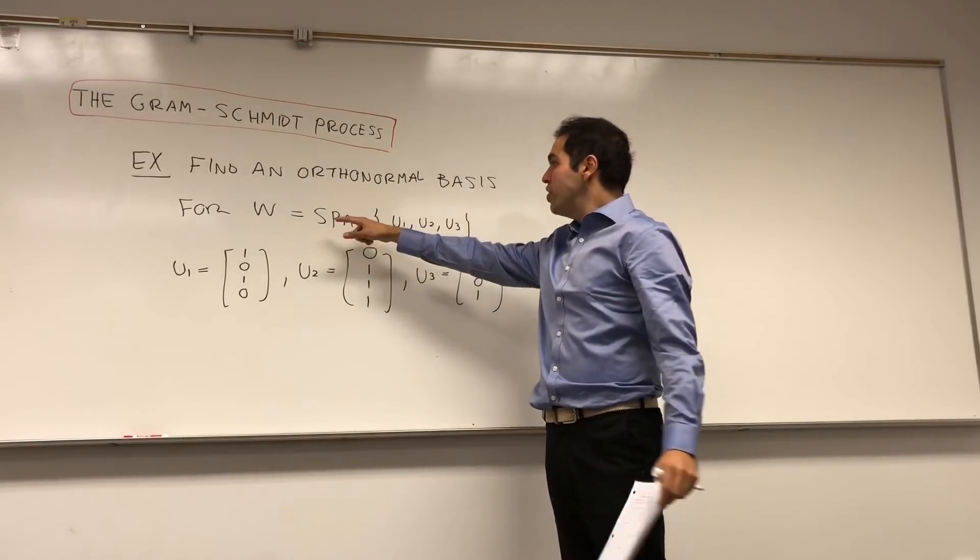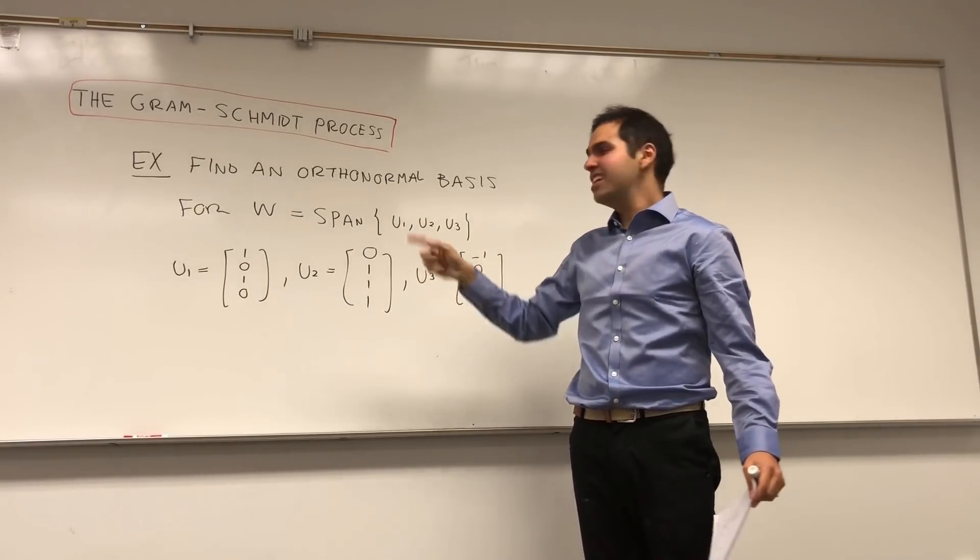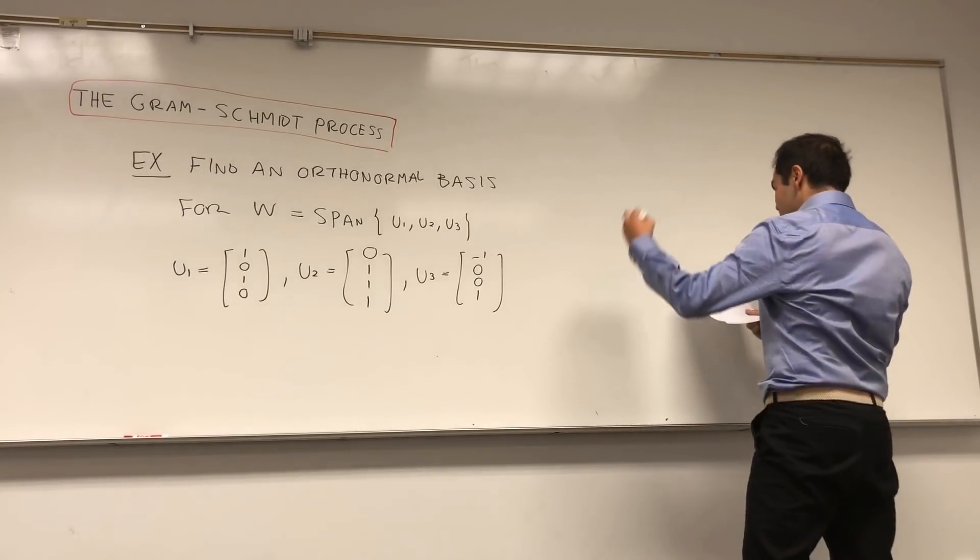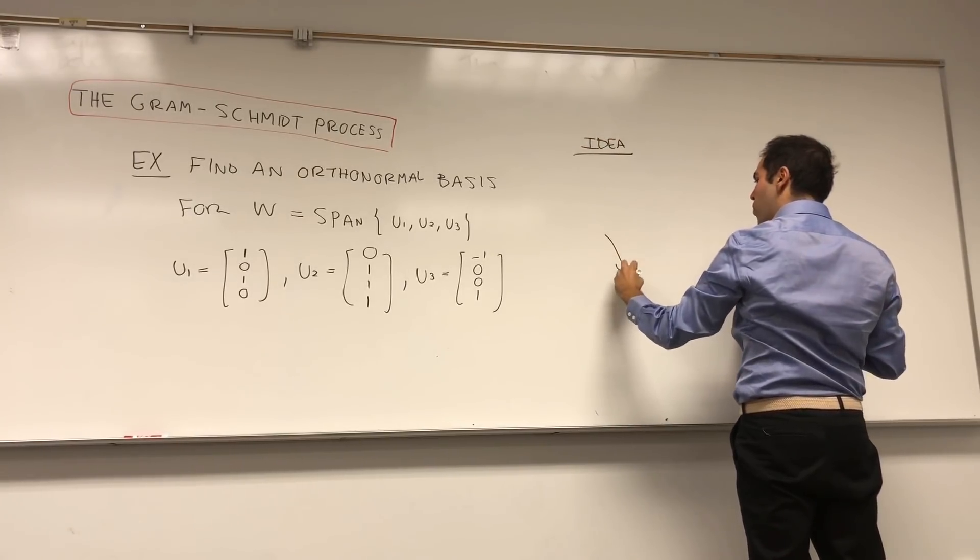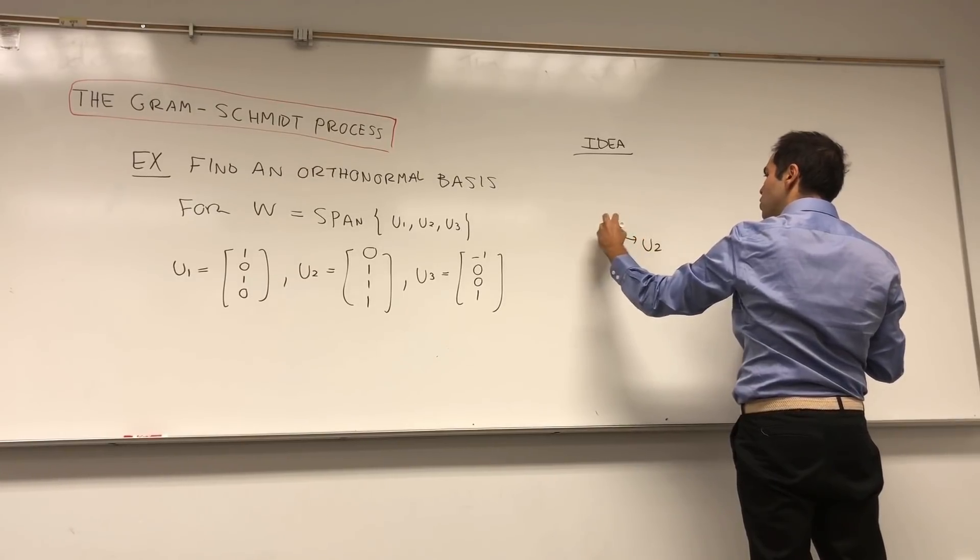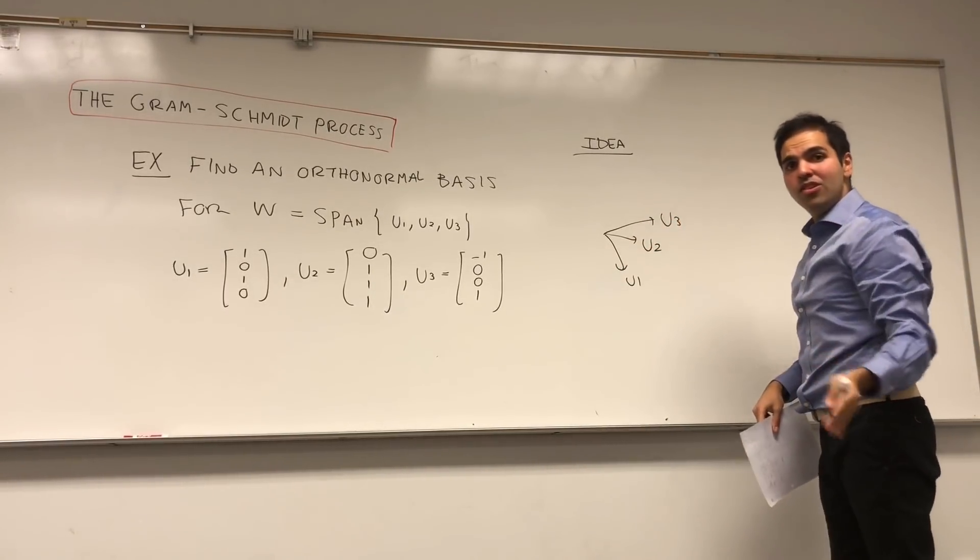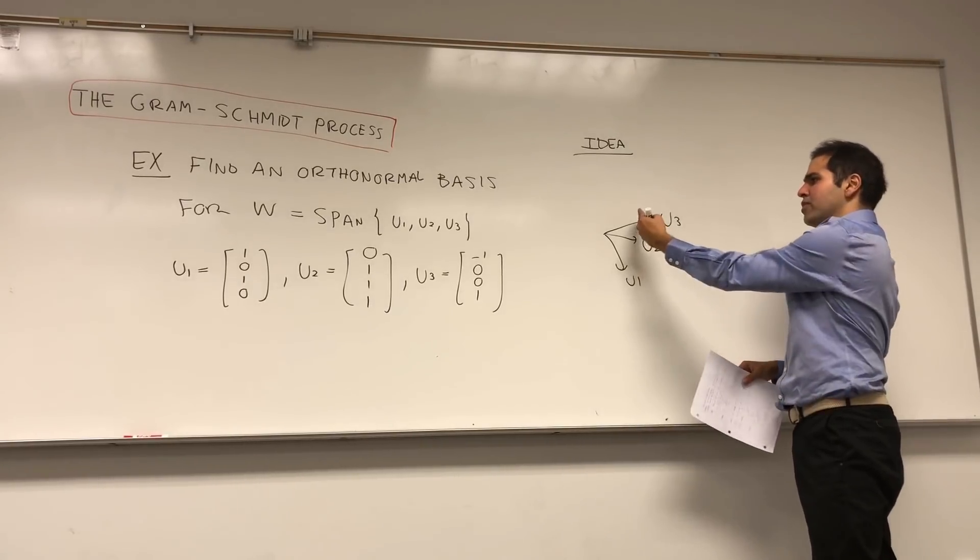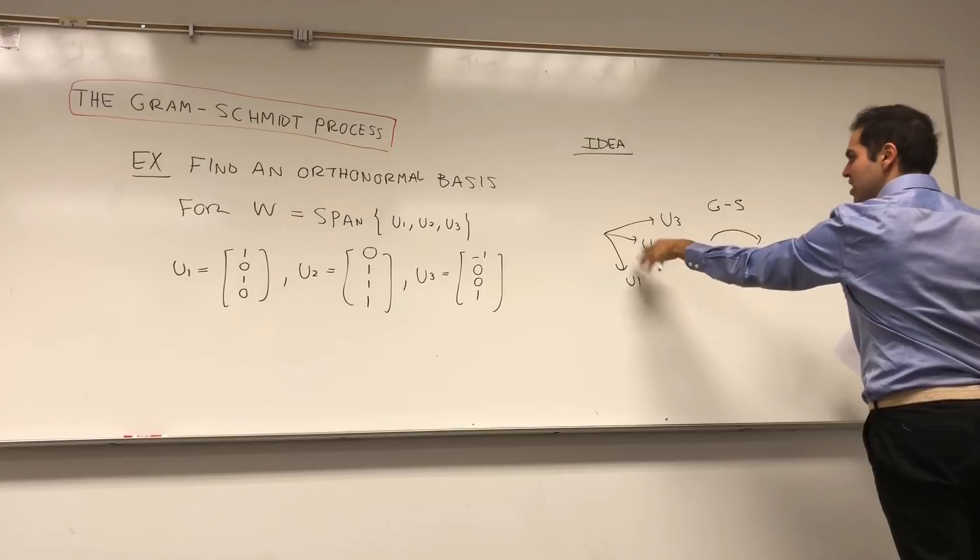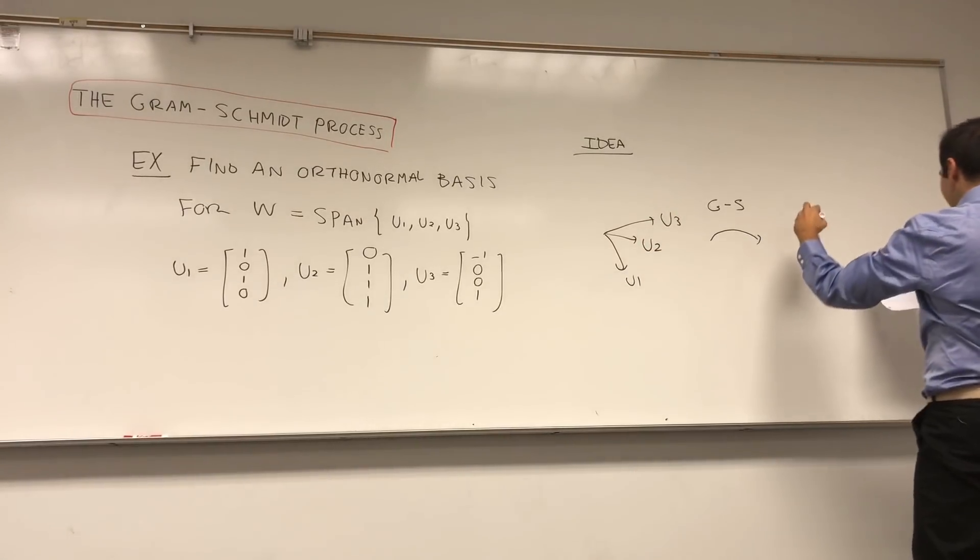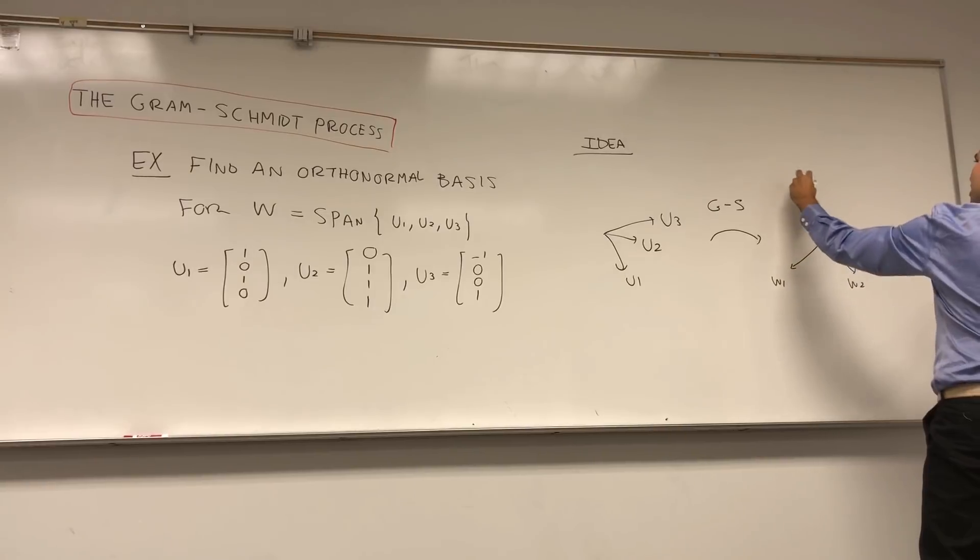What does that mean? So W is the span of those three vectors. In some sense, it's all the information that's contained by those three vectors. And the idea is as follows: we have those three vectors, they can point at any direction, U1, U2, U3, and what we want to do with that is turn this set into an orthonormal set.